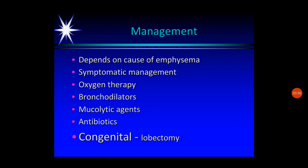Management depends upon the cause of emphysema and symptomatic management is usually done. Oxygen therapy is required. Bronchodilators are administered to dilate the reduced radius of the bronchus or bronchioles. Mucolytic agents are used to remove secretions that are decreasing the airway radius. Antibiotics may be required to prevent complications and to treat bacterial infections. In congenital lobar emphysema, lobectomy is performed to decrease complications in children.